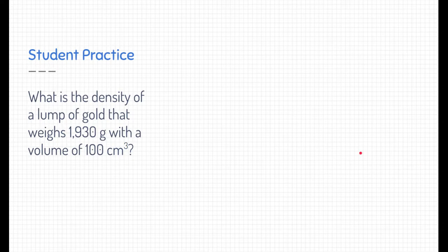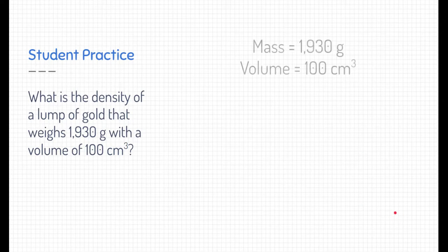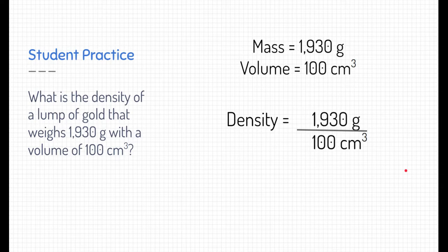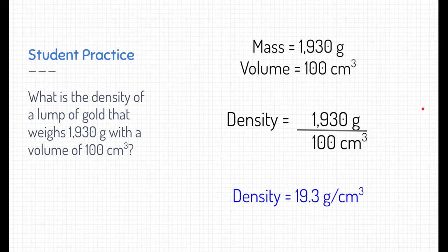What is the density of a lump of gold that weighs 1,930 grams with a volume of 100 centimeters cubed? Well, the two units that we have are mass and volume. Mass is 1,930 grams, and volume is 100 centimeters cubed. Quite simply, if we throw that in the density equation with mass divided by volume, we can calculate out the density, which is 19.3 grams per centimeters cubed.